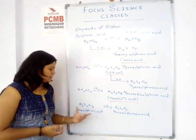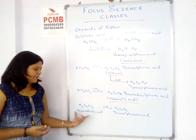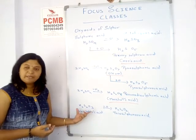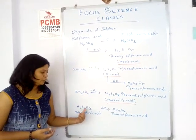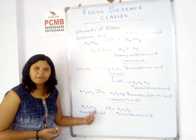Now coming back to thiosulfuric acid. The formula of thiosulfuric acid is H₂SO₃.